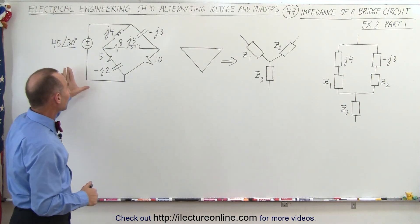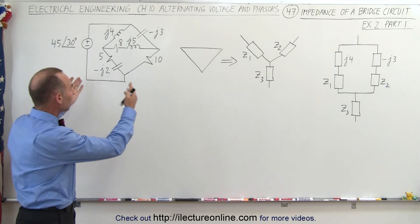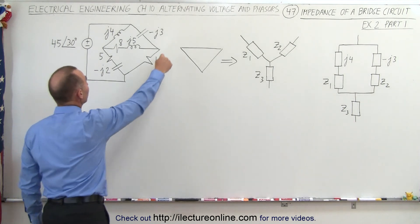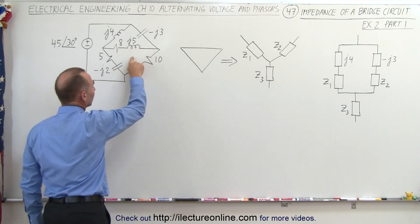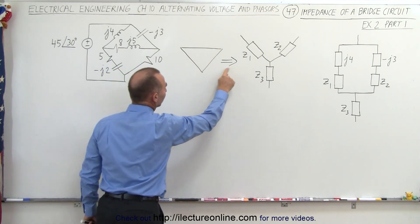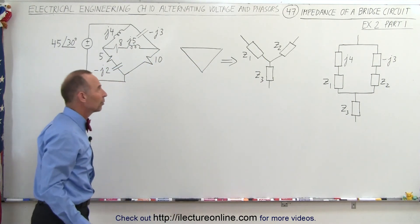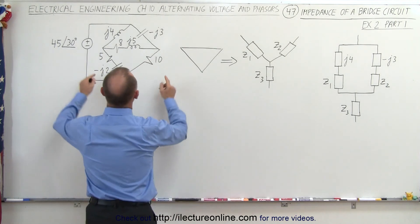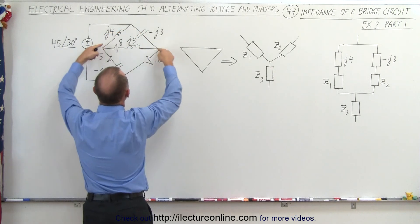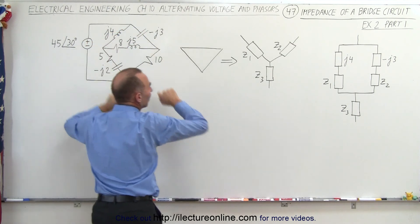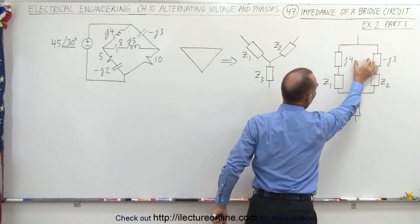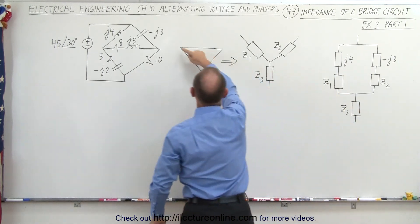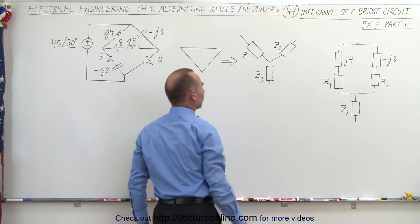We already have the bridge circuit in the correct format. What we're going to do this time is take the bottom portion of the bridge circuit — the delta portion — and convert it into the Y format. So we need to find Z1, Z2, and Z3. We're then going to attach that to the top two impedances, J4 and minus J3, which we already have. This becomes the Y equivalent of the delta portion of the bridge circuit.